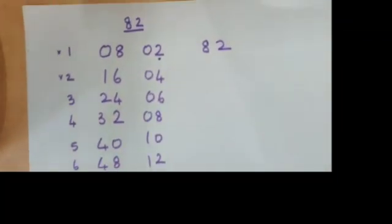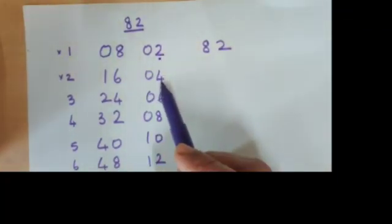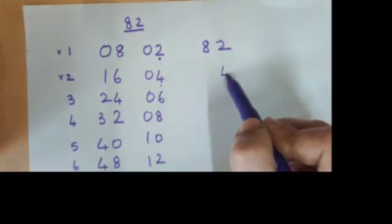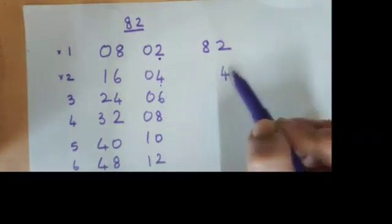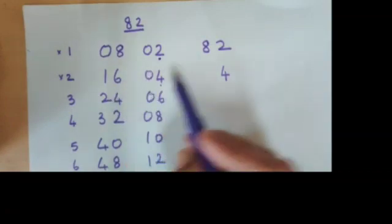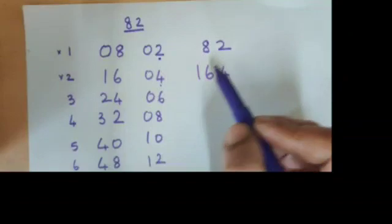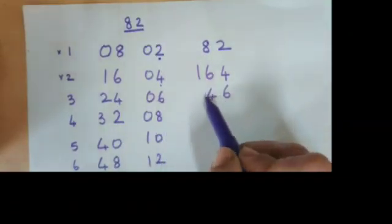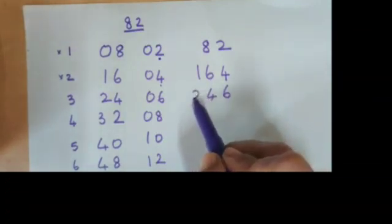Now all that you need to do, as I told you, whatever is in the last digit, please write it as it is in the last column. So 4. Whatever is here, add it to the one which is here. So 16 plus 0 remains as 16. The next one is 6 as it is, 4 plus 0 is 4, and you have 246.